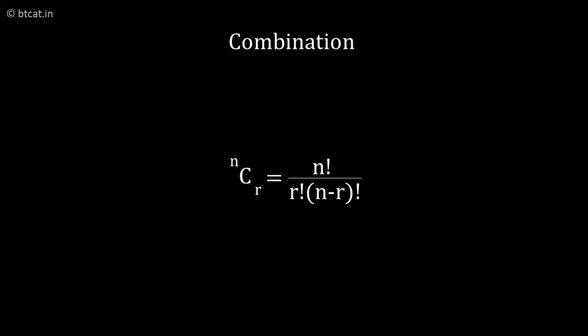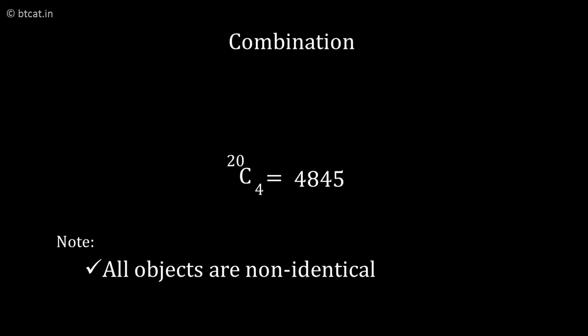So how to calculate it? NCR is N factorial divided by R factorial times N minus R factorial. So 20C4 will give us 20 factorial divided by 4 factorial into 16 factorial. Solving it, we can find the value of 20C4 or the number of ways of choosing or selecting 4 objects out of 20 objects.